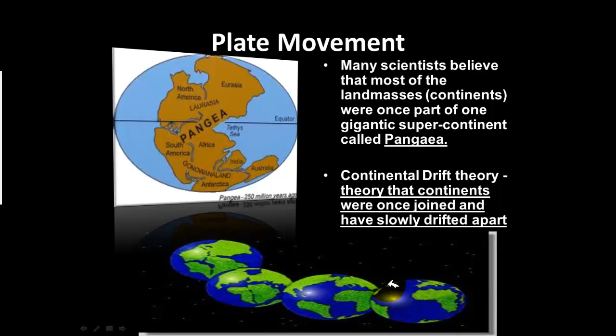This is called the Continental Drift Theory, which states that the continents were all once joined about 250 million years ago and have slowly drifted apart. Make sure you fill out your notes guide, highlight the answers to your learning targets, and I will see you in class.